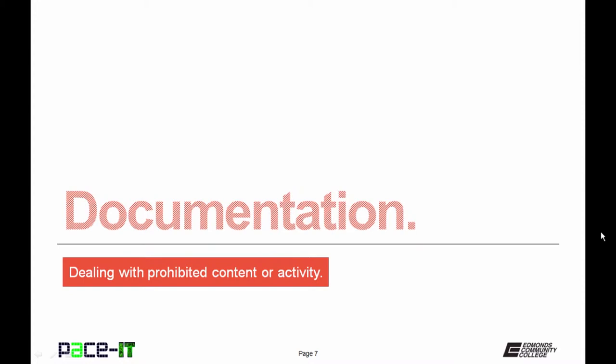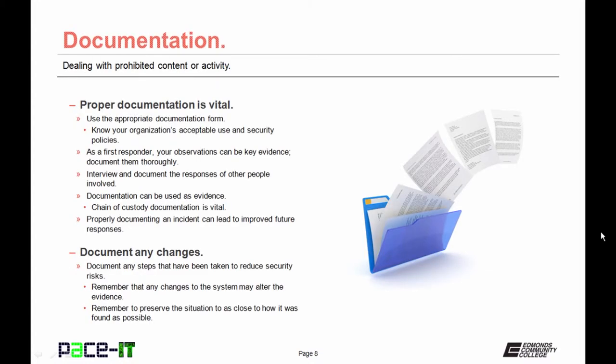Now let's move on to documentation. Proper documentation is vital. Use your organization's appropriate documentation form. As a first responder, your observations can be key evidence, so you need to document your observations thoroughly. Interview and document the responses of other people involved. Documentation can be used as evidence, and a chain of custody document is vital in any proceeding. Properly documenting an incident can lead to improved future responses.